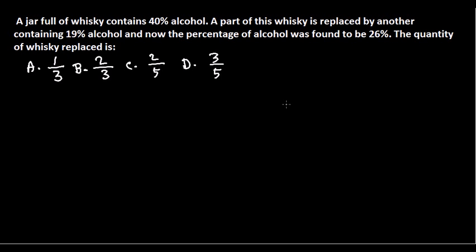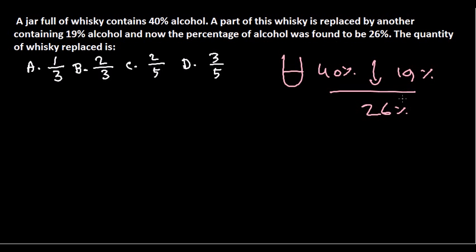Let's solve this problem. A jar full of whiskey contains 40% alcohol. A part of this whiskey is replaced by another containing 19% alcohol, and now the percentage of alcohol was found to be 26%. So what is the quantity of whiskey replaced?